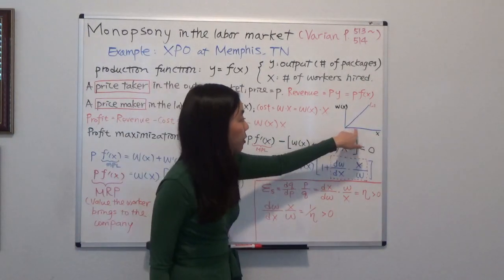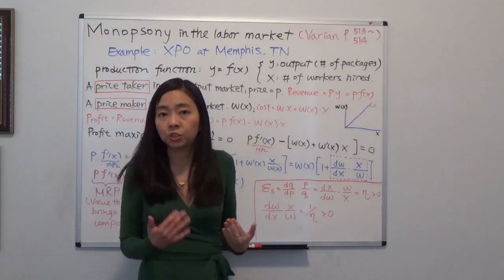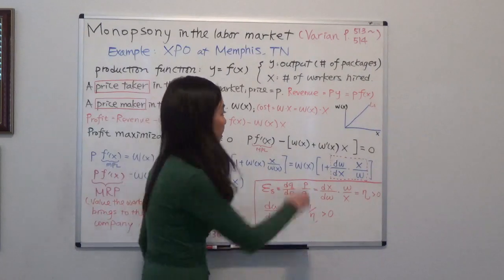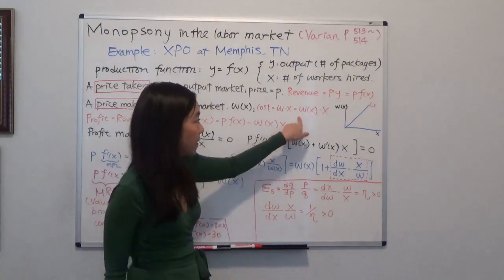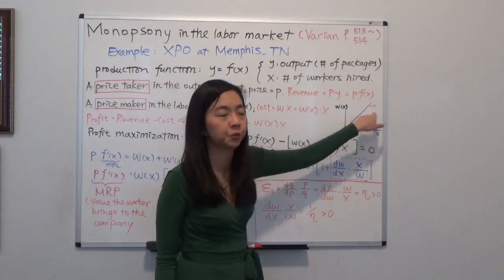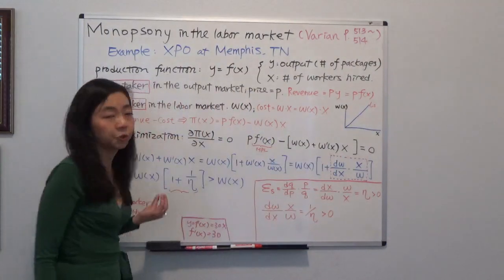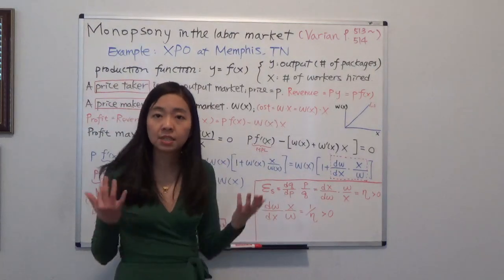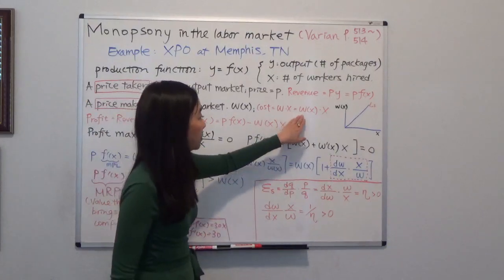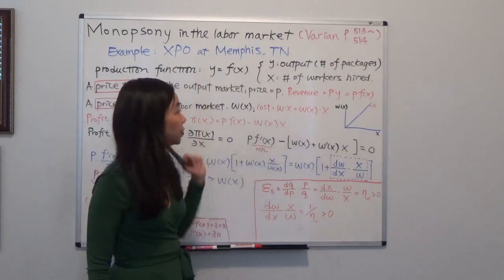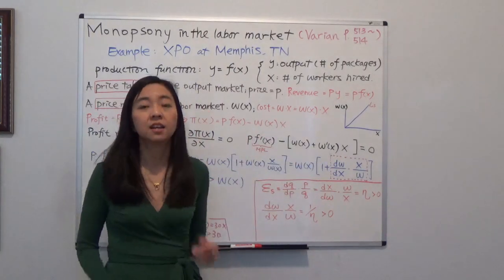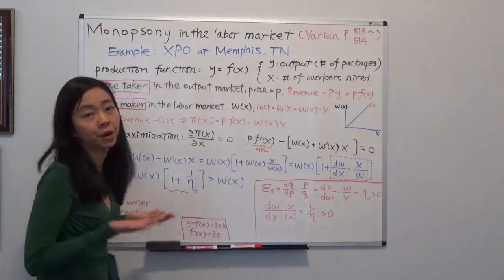And when you hire more workers, you have to increase the wage, not just the wage for the additional worker, but also the wage for every worker. And therefore, your wage is a function of the number of laborers you hire. And there is a positive correlation between the two. So your total cost will be equal to your wage times the number of workers you hire. So that will be W times X. And don't forget that W is a function of X. So your cost is equal to W(X) times X.